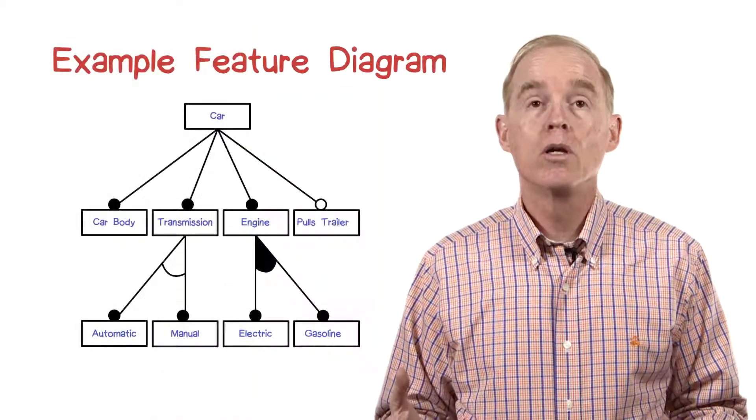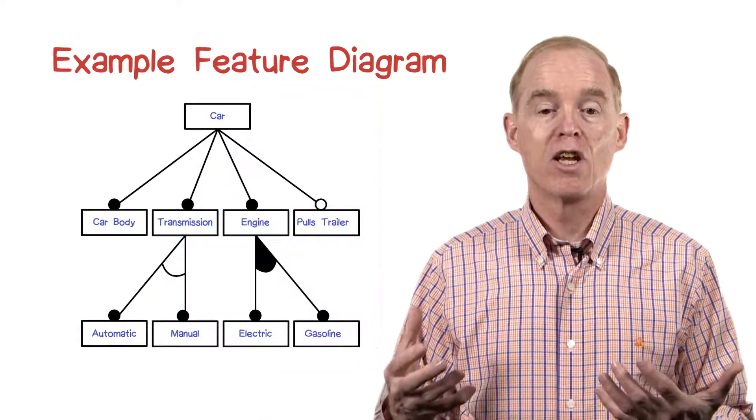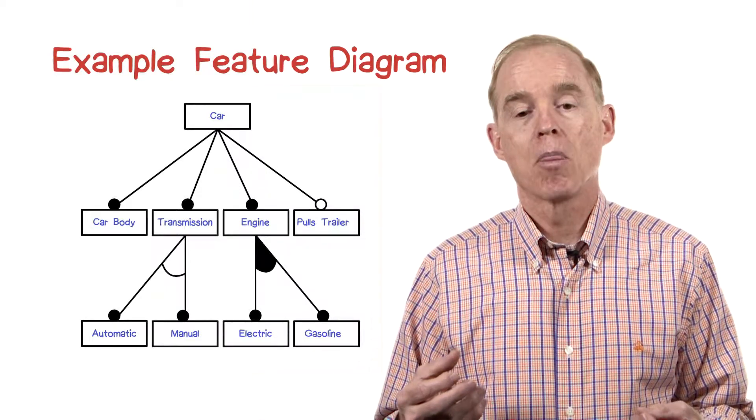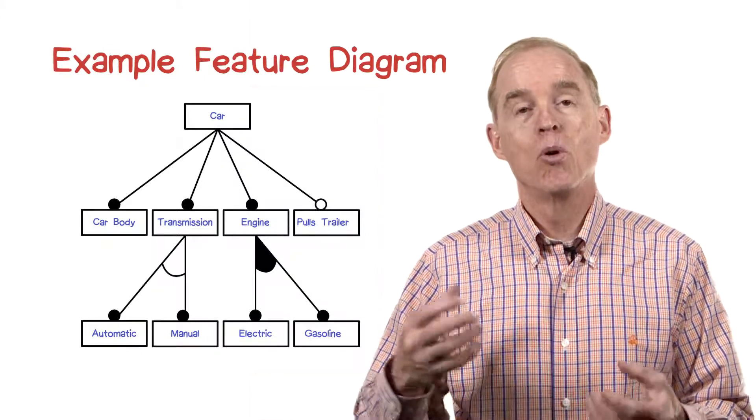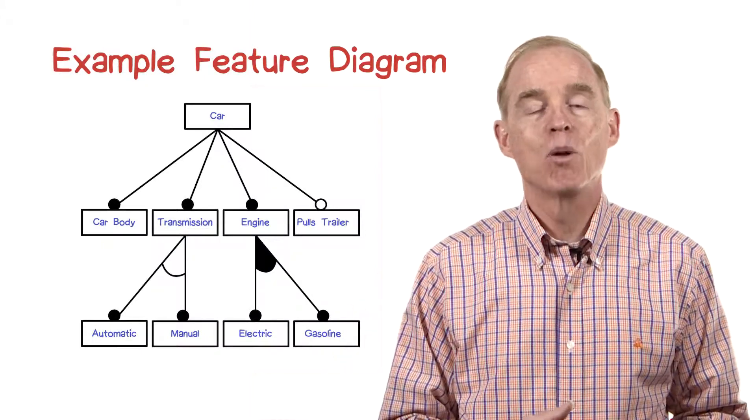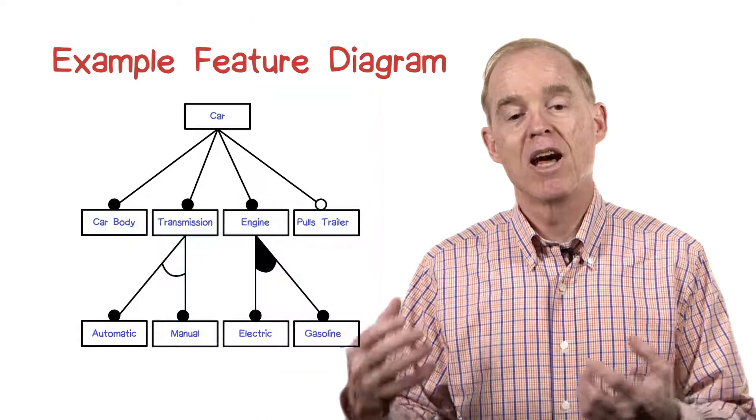In this case, the arc is filled in, indicating that you can have a combination. That is, you could have a hybrid engine. We could imagine a constraint here going between automatic transmission and pulls trailer, saying that the pulls trailer option is only available if you have the automatic transmission and not the manual transmission.